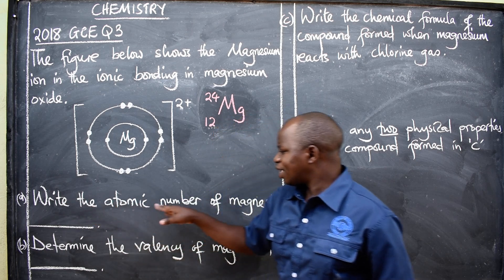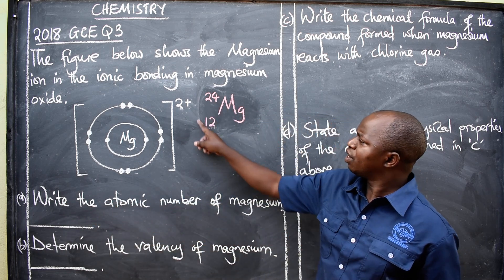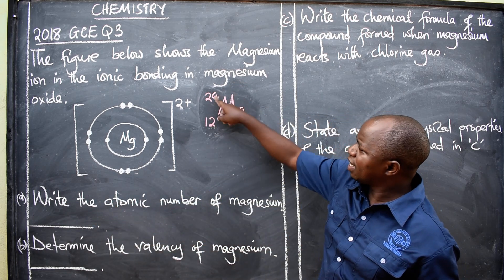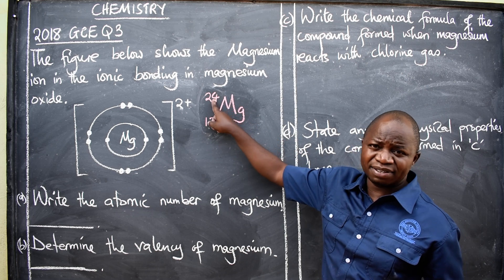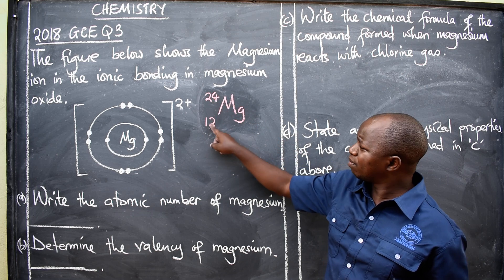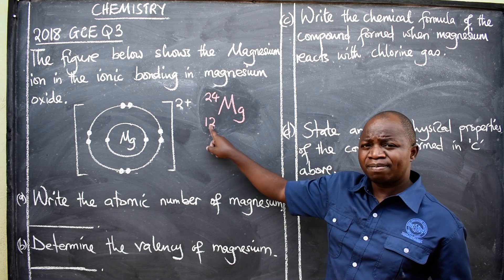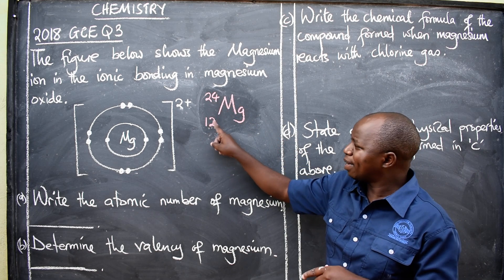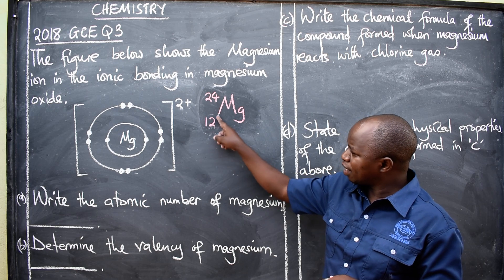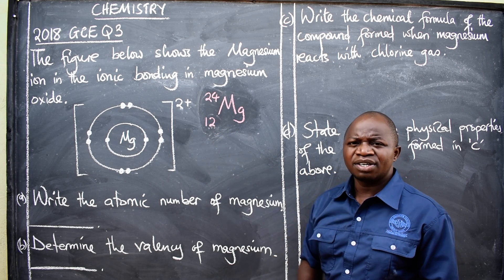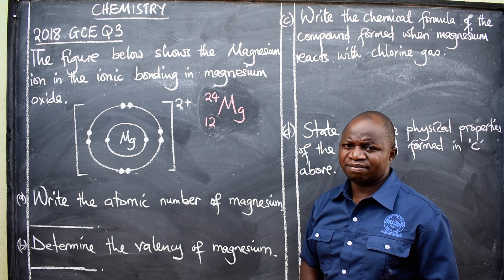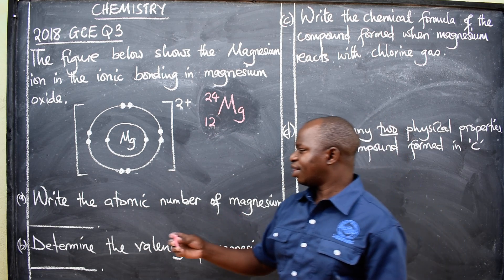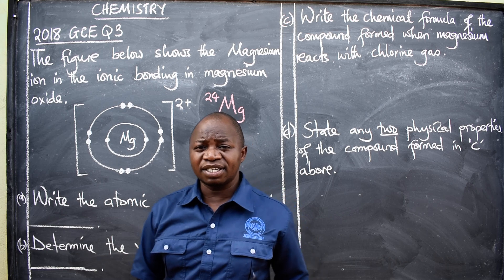Now let's answer Part A: the atomic number of magnesium. As discussed, the bottom number on the periodic table is the proton number or atomic number. So the atomic number of magnesium is 12. You can also verify this from the diagram: the electrons shown are 10 plus 2, which gives you 12.